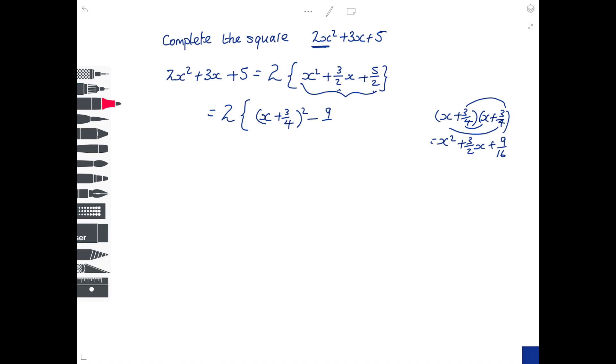So I get rid of the 9 over 16 that I don't want, and I add in the 5 over 2 which I do want from up there. Keep the 2 going, so it's 2 lots of x plus 3 quarters squared.